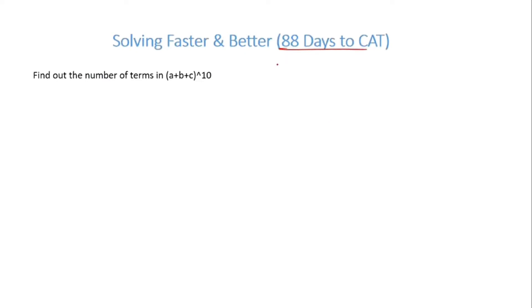88 days to CAT. So a trivia: 88 squared is 7744. That's the only number which is a perfect square of the form XXYY.